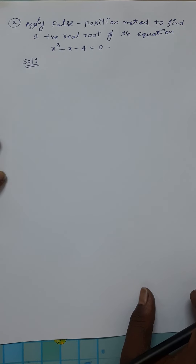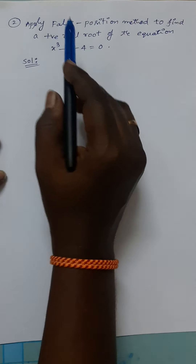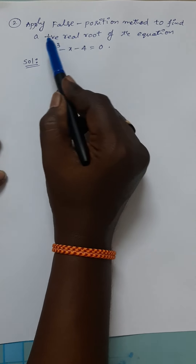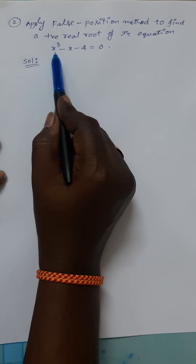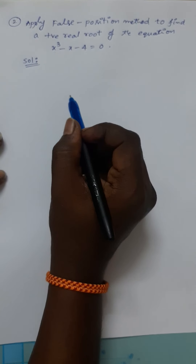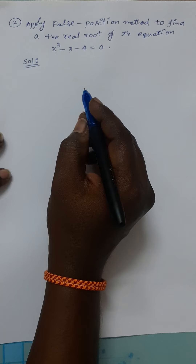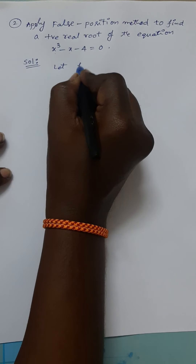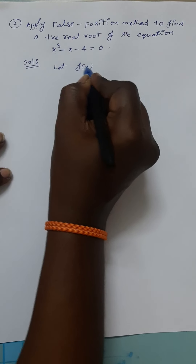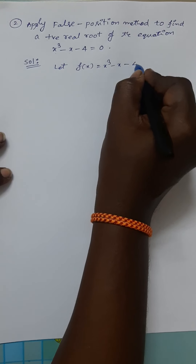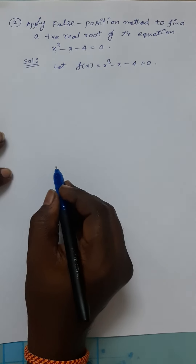The false position method is also known as the regular falsi method. See the statement of the problem: apply the false position method to find a positive real root of the equation x³ - x - 4 = 0. As usual, first of all, let us denote the given equation with f(x). So let f(x) = x³ - x - 4 = 0. Take this as equation 1.